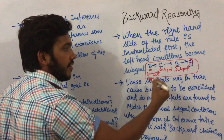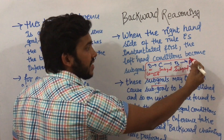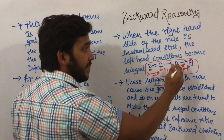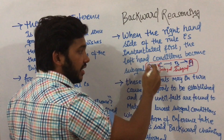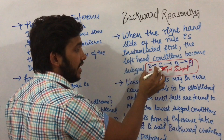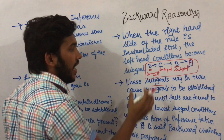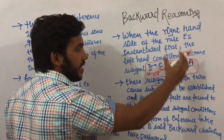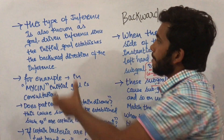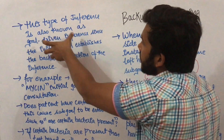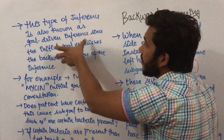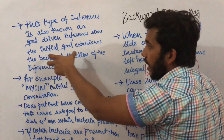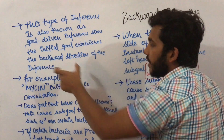When this form of inference takes place it is called backward chaining. Here, A was the right hand side — we begin from A, then B was our sub-goal, B had another sub-goal C, and D is the lowest sub-goal. When we match the lowest condition, backward reasoning is performed. This type of inference is also called goal-driven inference, since the initial goal establishes the backward direction of the inference.